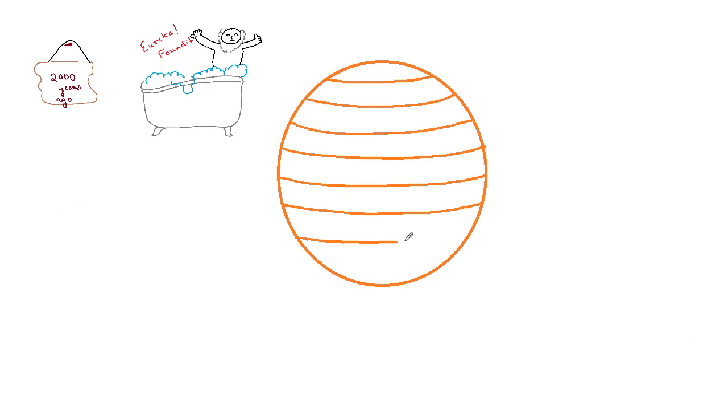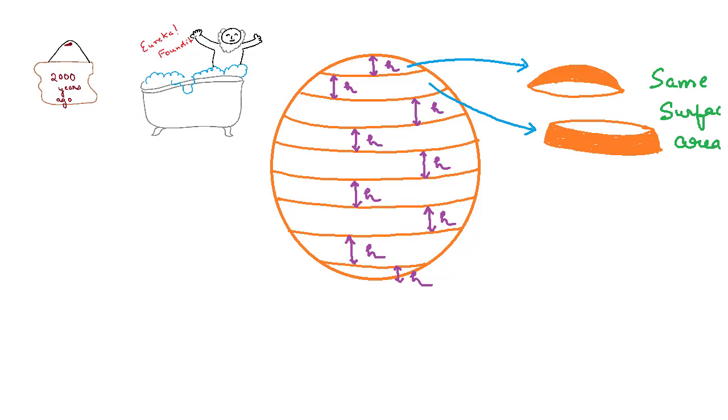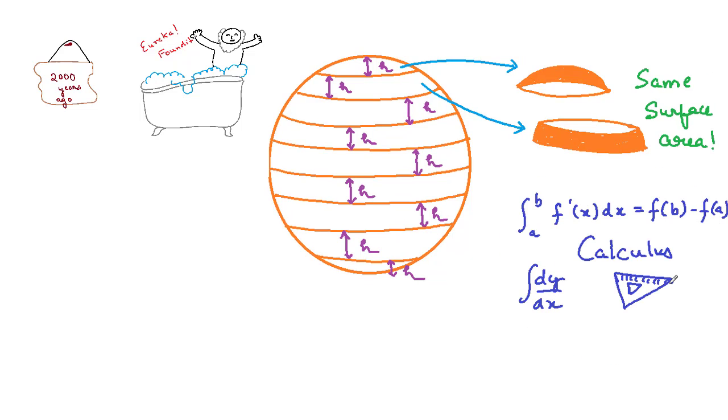Archimedes proved that if we cut an orange into slices of equal thickness, the peel area is the same even for the topmost slice. The most amazing thing is that he did this without calculus.